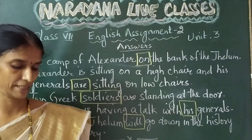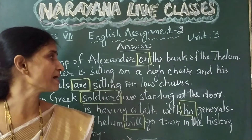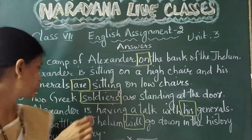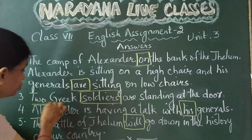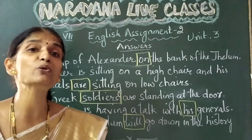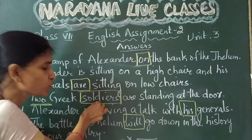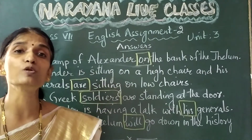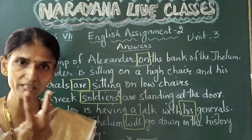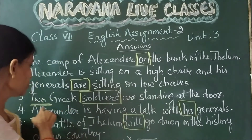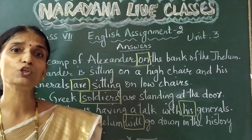Now the third sentence: 'Two Greek soldiers are standing at the door.' The subject is 'two Greek soldiers.' When we have 'two' here, it is plural — more than one. So when it is more than one, we should use the plural form of the noun 'soldier.' It should be 'two Greek soldiers.' Two is plural, more than one is plural. So the correction is: 'Two Greek soldiers are standing at the door.'